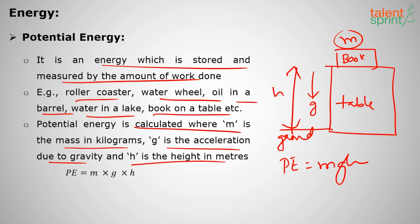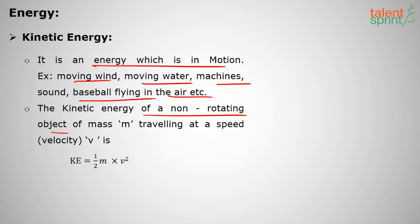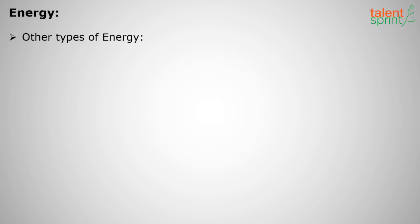Because an object is placed at a height h, it has potential energy equal to mgh — similar to water stored behind a dam. Kinetic energy is the energy of motion. Examples include moving wind, moving water, machines, and a baseball flying through the air. The kinetic energy of a non-rotating object is ½mv², where m is mass and v is velocity.